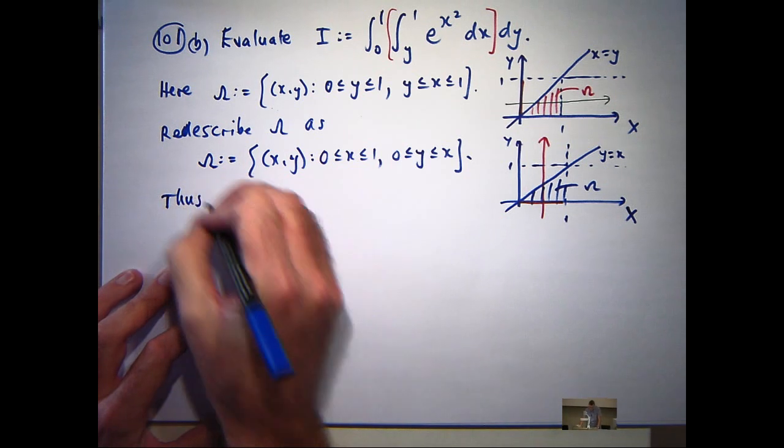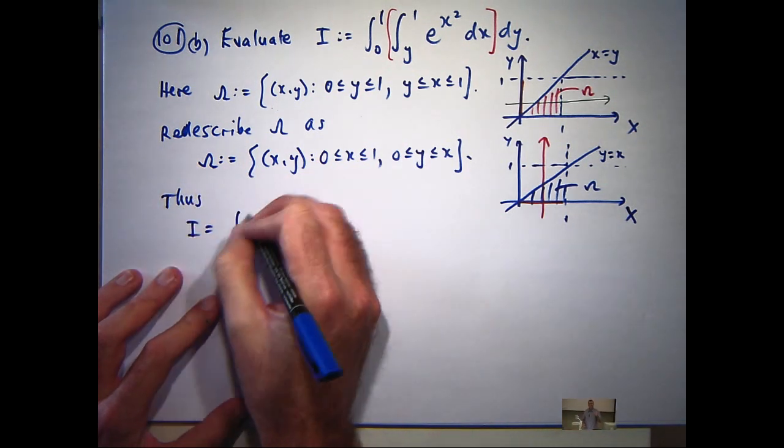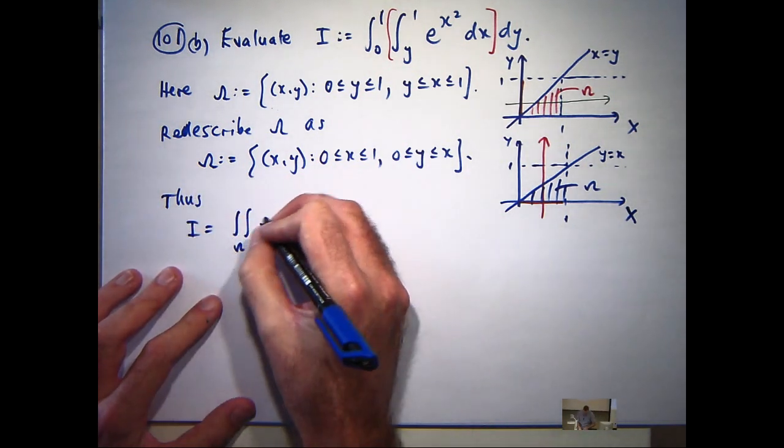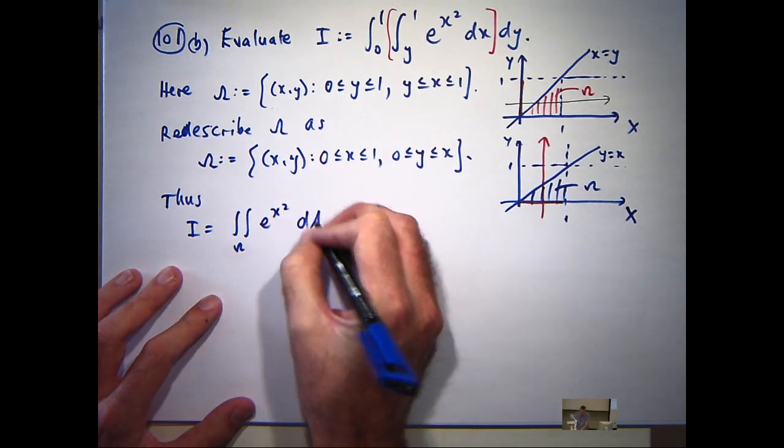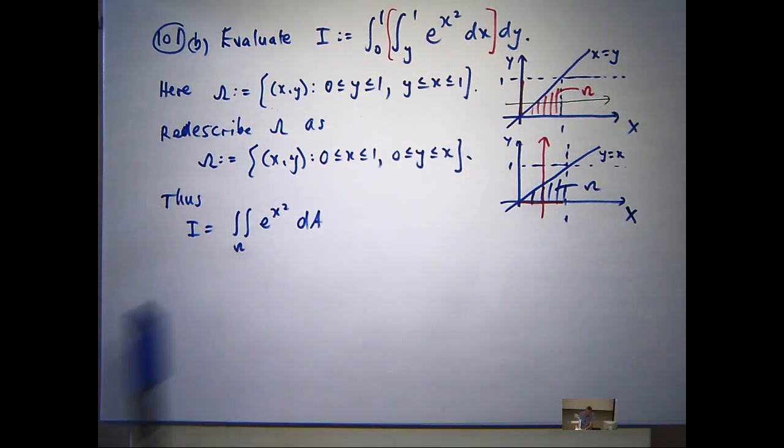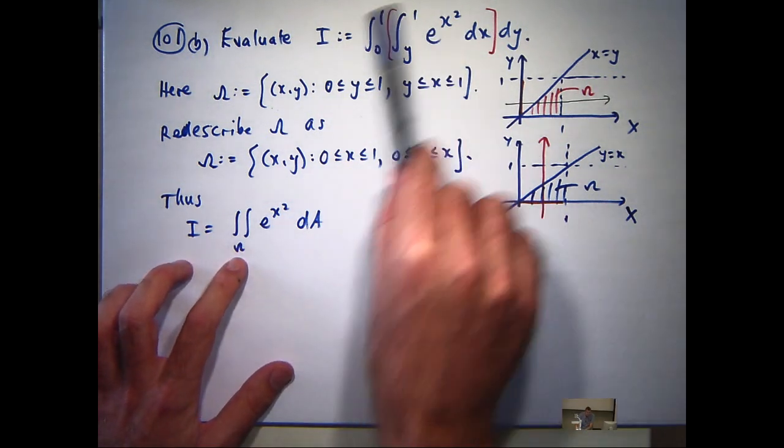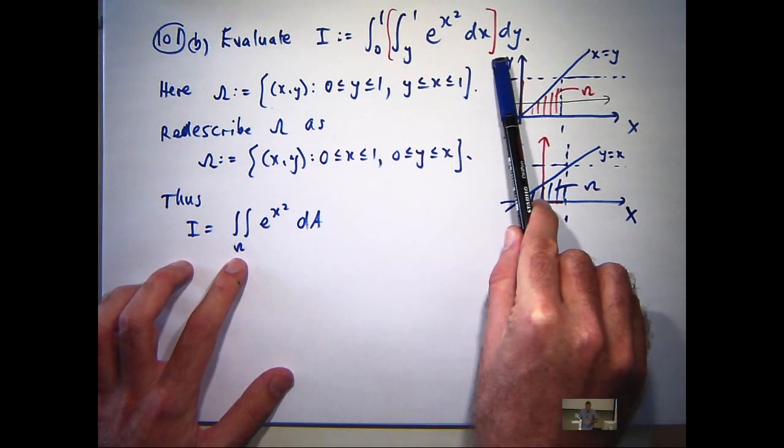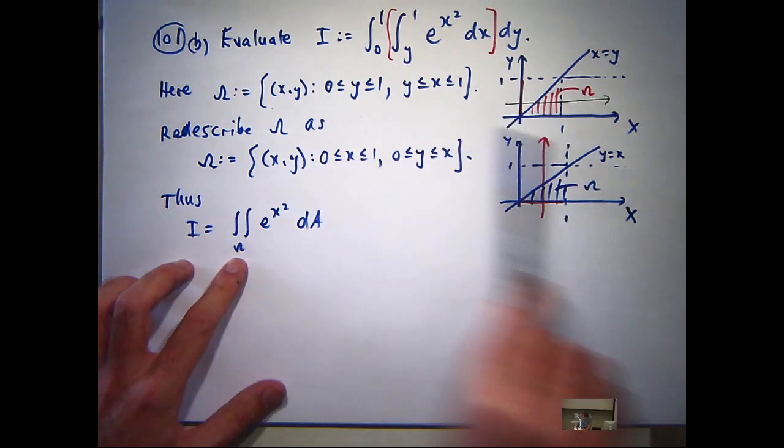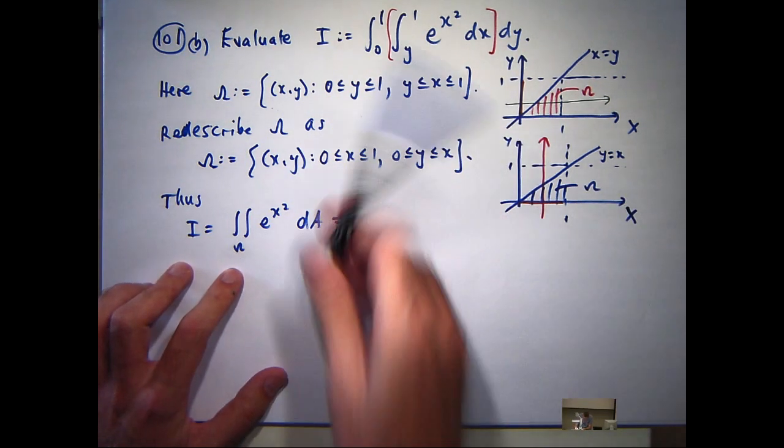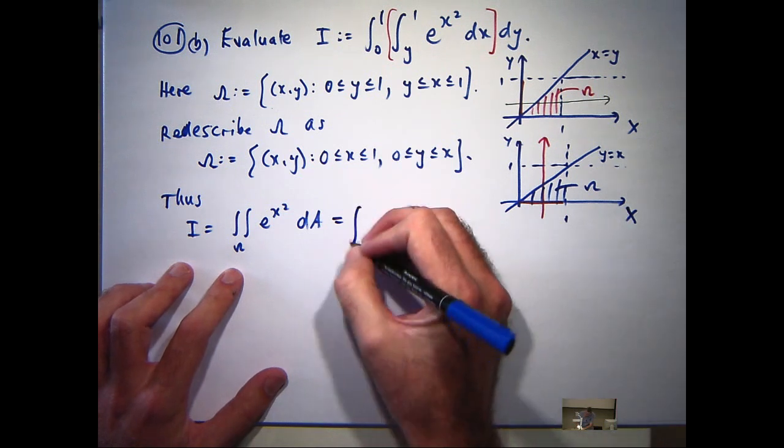So, I is just the double integral of this function over omega. Fubini's theorem says that, okay, I can write this as a double integral, either like that, like we had at the start, or using this setup here. So I'm going to use this setup, because I'm going to reverse the order of integration.